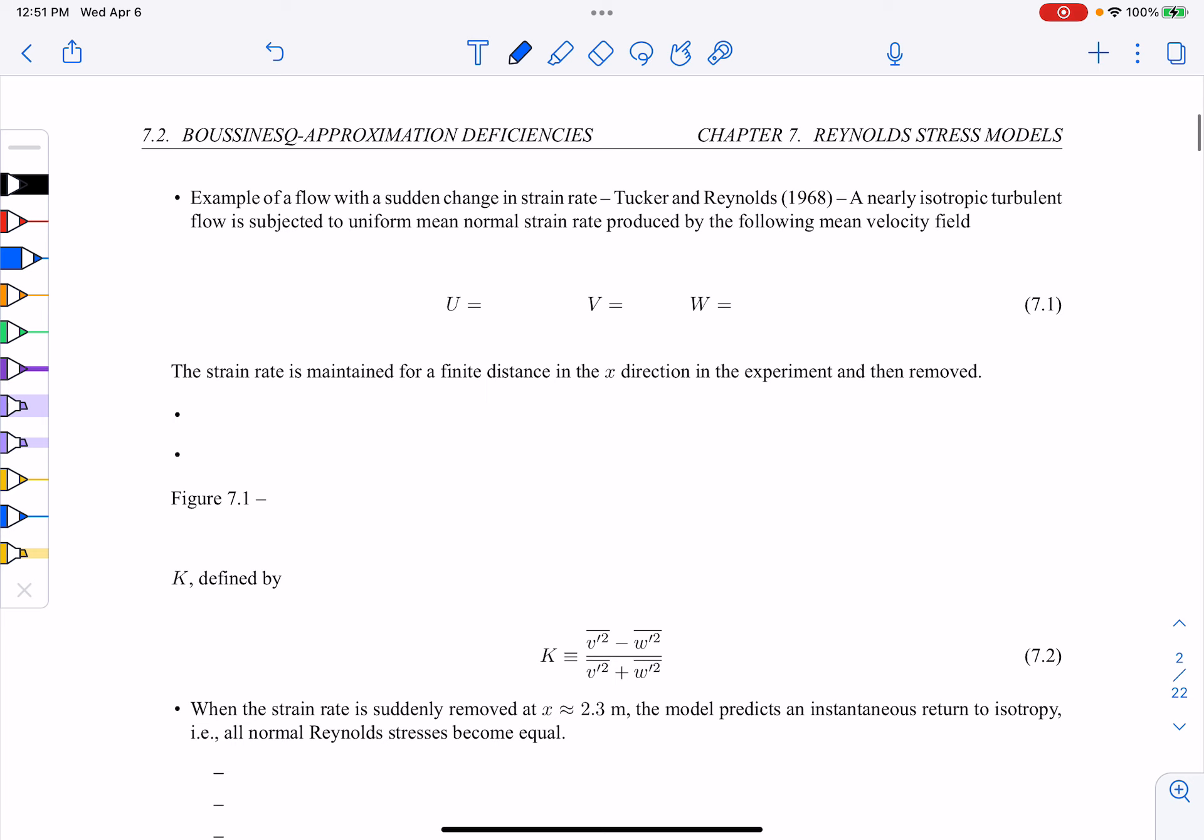So let's look at one particular example of a flow of sudden change in strain rate. And that's given in Tucker and Reynolds in 1968. It's a nearly isotropic turbulent flow subjected to a mean normal strain rate, produced by the following mean flow field.